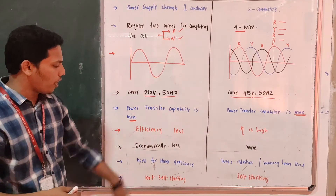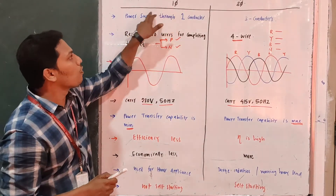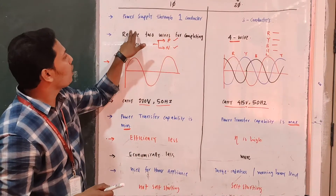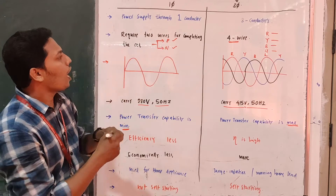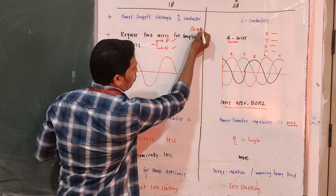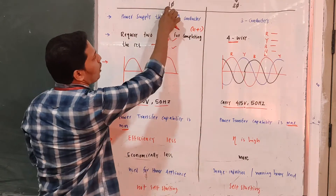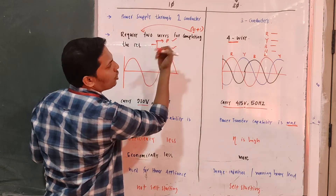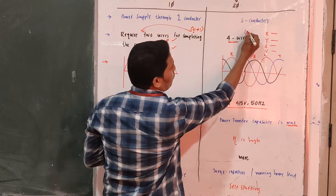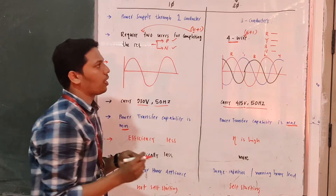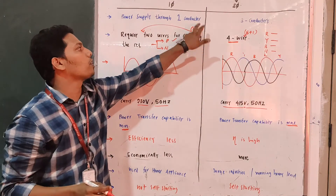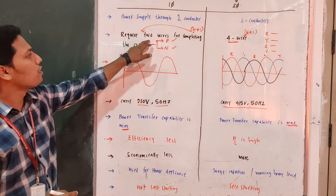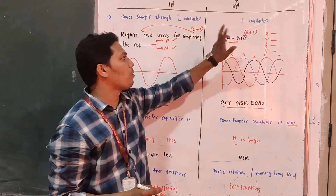So these are the main points. For a single phase system, only one phase conductor; for three phase, three phase conductors. Total number of wires — we can use the shortcut formula n plus one. For single phase, n equals one, so one plus one equals two conductors. For three phase, three plus one equals four wires. Here n represents the number of phases, so it requires two conductors for single phase and four conductors for three phase.